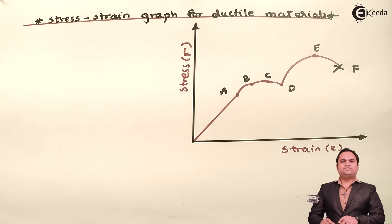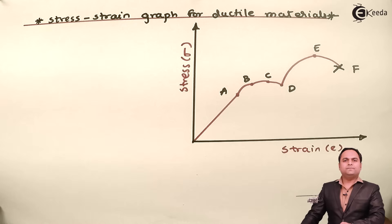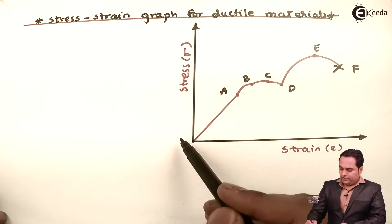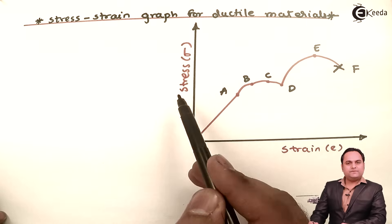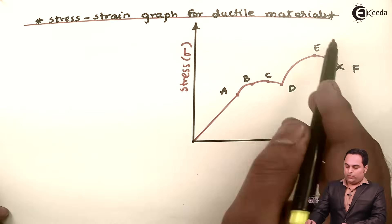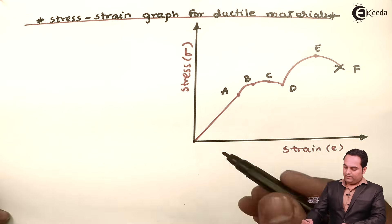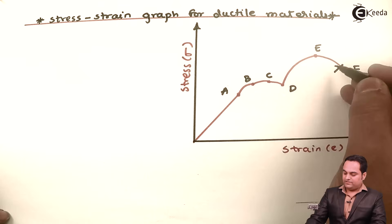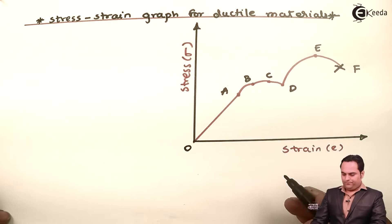Hello friends. In this video we will see the stress-strain graph for ductile materials. I have drawn the diagram here. In this diagram we have stress on the y-axis and strain on the x-axis. We can see some lines which I have drawn in red, and this is the origin O.